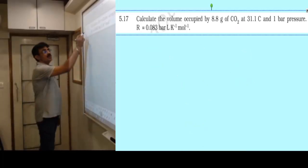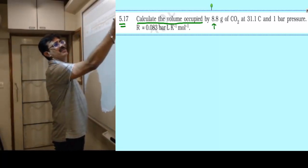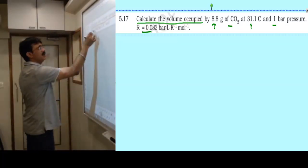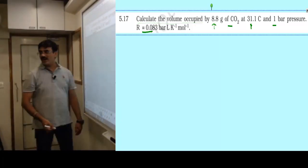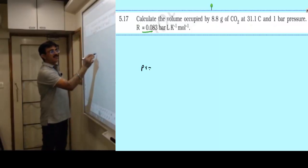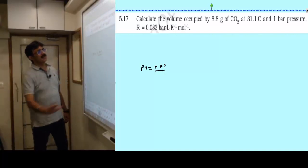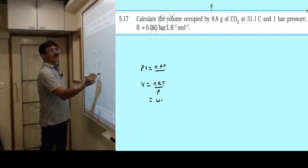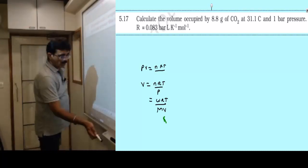Question 5.17 says: calculate the volume occupied by 8.8 gram CO2 gas at 31.1 degree Celsius and 1 bar pressure. I think this is one of the easiest questions. PV equals nRT, or we may write V equals nRT by P, or WRT by MP. Put all the values and you will get the answer. Please do that.